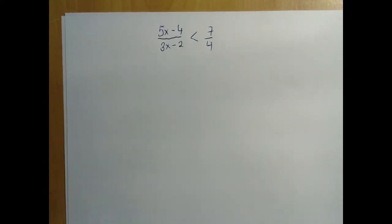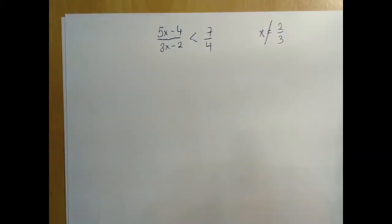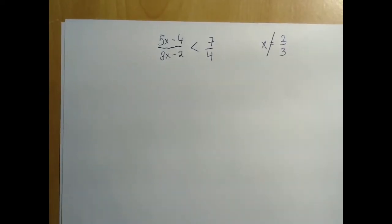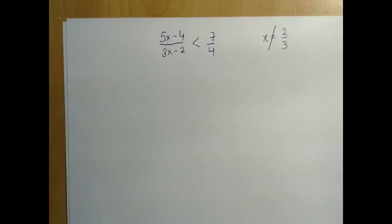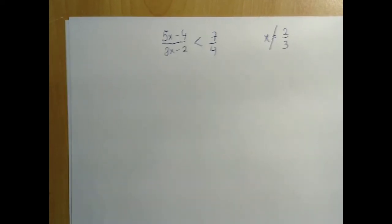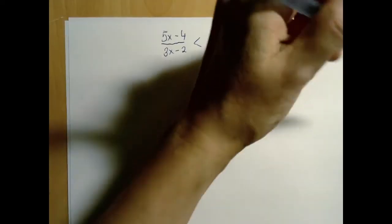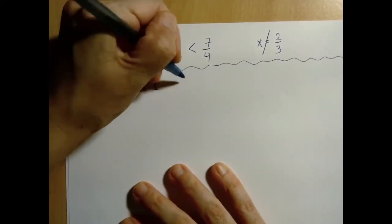Let's start first by noticing that the left-hand side is not even defined if the denominator is 0. Therefore, x cannot be 2 or 3. So we would like to multiply by 4 times 3x minus 2, but for that, we need to know whether it's positive or negative. And although we do not have any control over whether this expression is positive or negative, what we can do is just follow it carefully. So basically, we are going to separate the universe into two parallel universes.